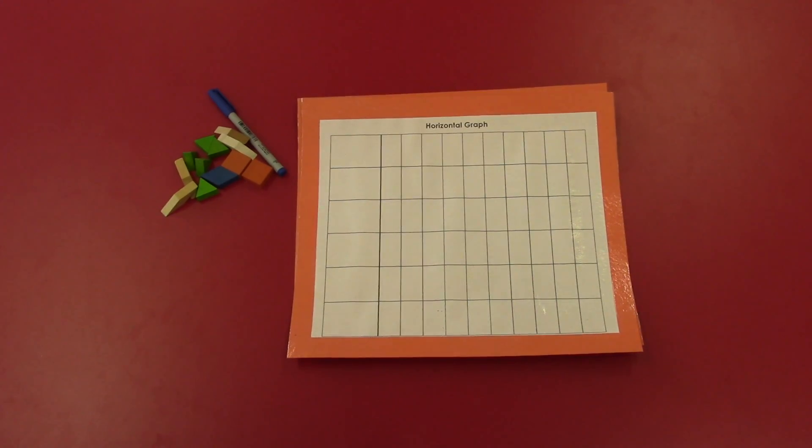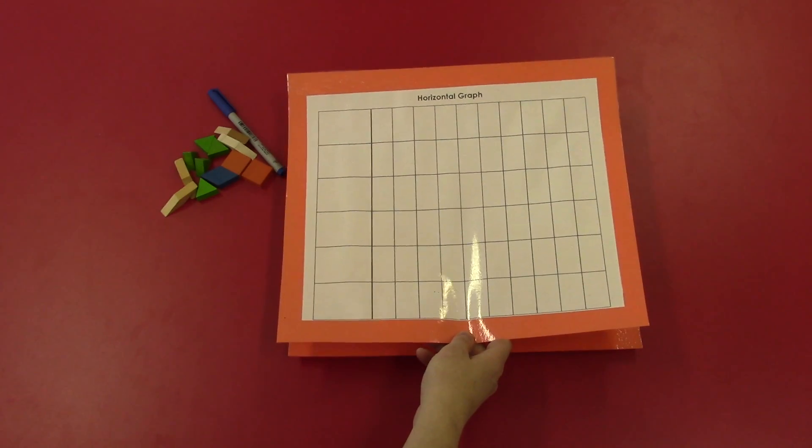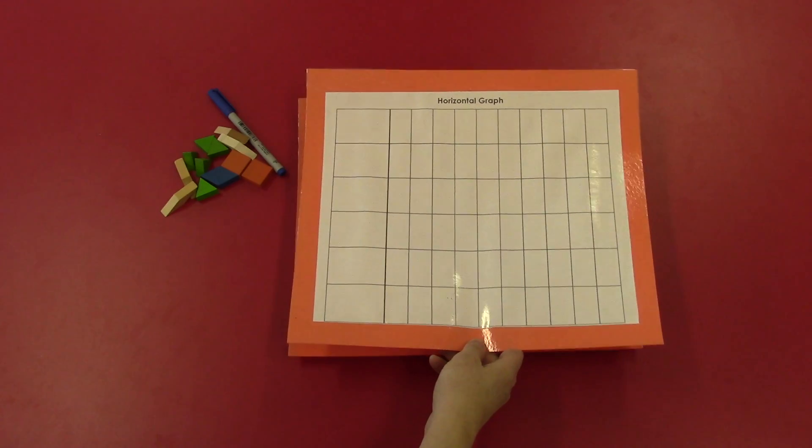In this video we are going to go over how to create a concrete graph. You will need a few materials for this. You will need graph paper of some kind. You can print off paper from the internet. Please see the video description for some PDFs.